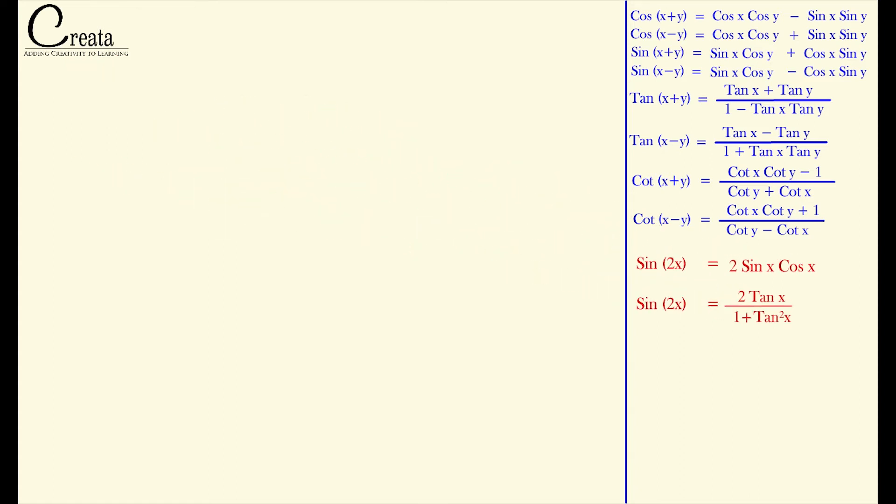For the time being, let's keep it separately. Now move to cos2x. We can write cos2x as cos(x+x). The applicable formula will be cos(x+y). On applying the formula, we got the output as cos²x - sin²x. Now with this term, we will derive three formulas of cos2x.